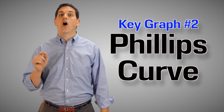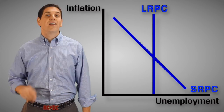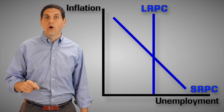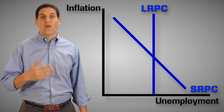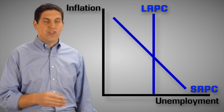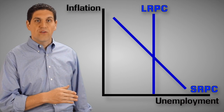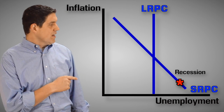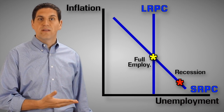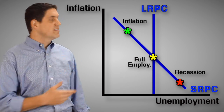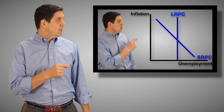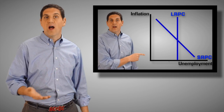The second key graph is something called the Phillips curve. Just like aggregate demand and supply, the Phillips curve shows recession, full employment, and an inflationary gap — but this time it's just points on the curve. So down here represents a recession, right here represents full employment, and up here is an inflationary gap. If you want to learn more about the Phillips curve, go ahead and click here to watch that video.